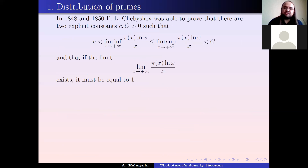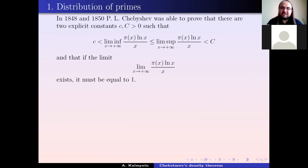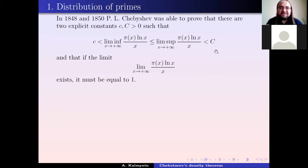Chebyshev was able to prove inequalities with explicit constants c and C greater than zero such that the lower limit is positive and the upper limit is finite. He also proved that if the limit exists it must equal one. A version of Chebyshev's argument for the upper bound will be given in the problem set for the seminar.